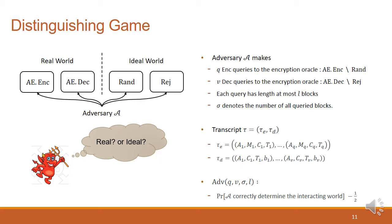Now, we will talk about the security of SCM. To give formal security proof, we use Distinguishing Game. In this game, the adversary is interacting either with the real world and the ideal world. The real world comprises the AE encryption and decryption, while the ideal world comprises a random function and reject function. The adversary tries to distinguish two worlds by making q encryption queries, v decryption queries, its length at most L blocks. Note that sigma denotes the number of all-queried blocks. The distinguishing advantage of the adversary is defined as the probability of correctly determining the interacting world, minus 1 over 2, which is a probability of winning by simple random guessing.